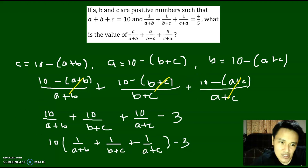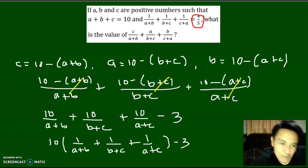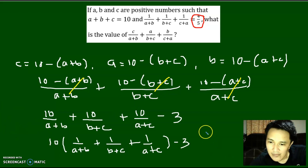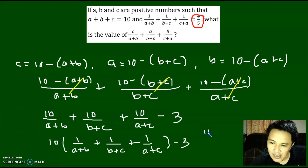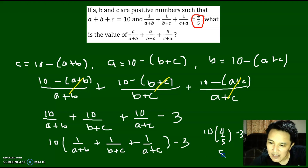And notice that this expression — 1 over A plus B plus 1 over B plus C plus 1 over A plus C — is actually equal to 4 fifths. So therefore, this expression can be written as 10 times 4 fifths, minus 3. And this becomes 10 over 5 is 2, times 4 is 8, minus 3, and that is 5.